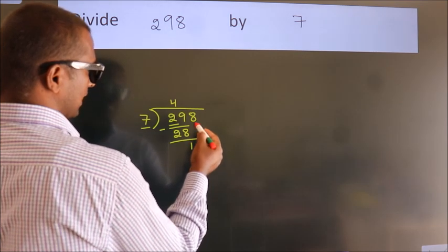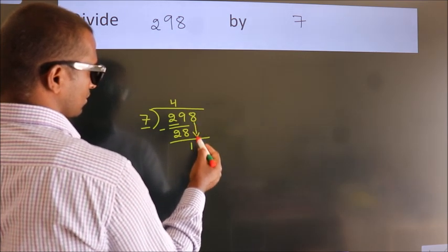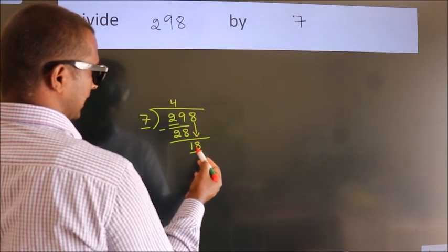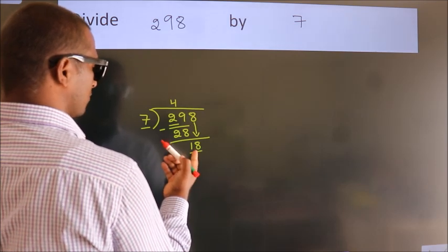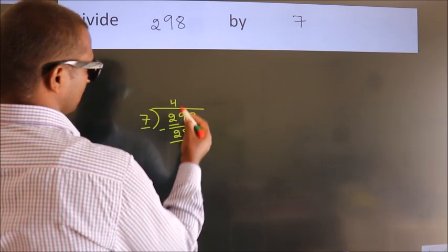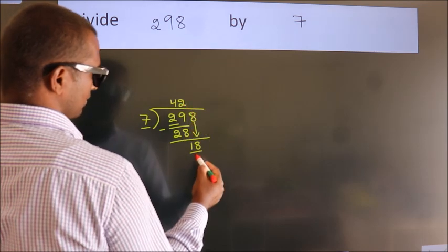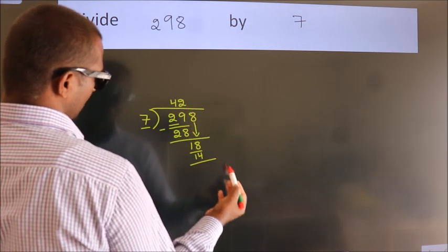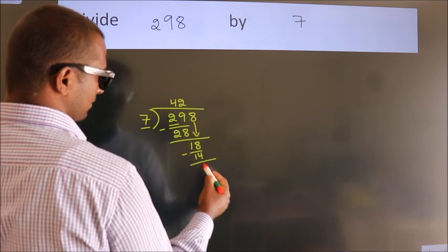After this, bring down the next number. So 8 down, so 18. A number close to 18 in the 7 table is 7 twos, 14. Now we subtract. We get 4.